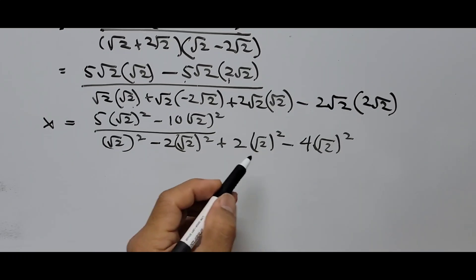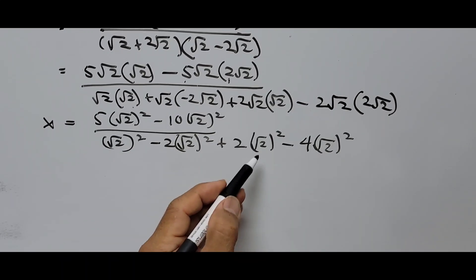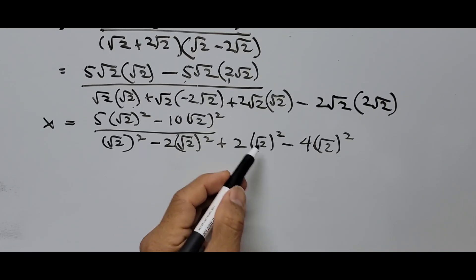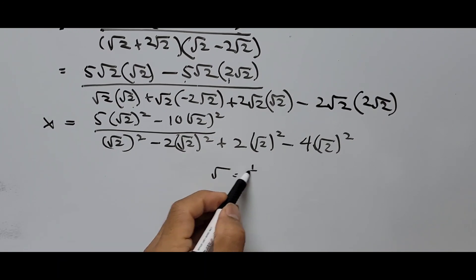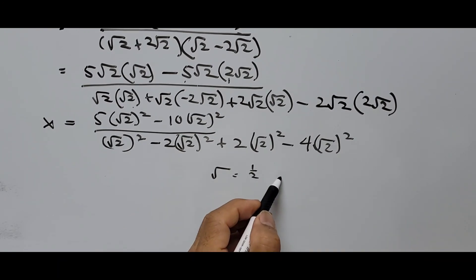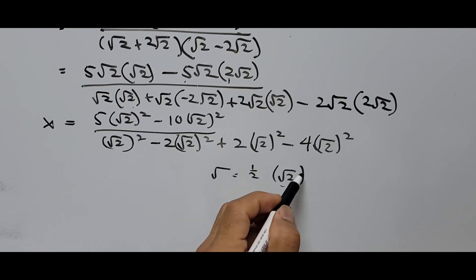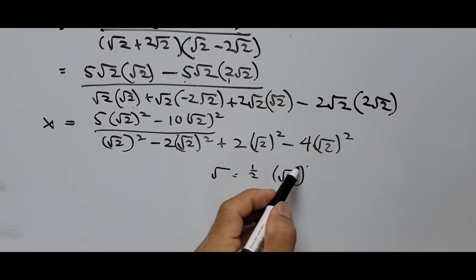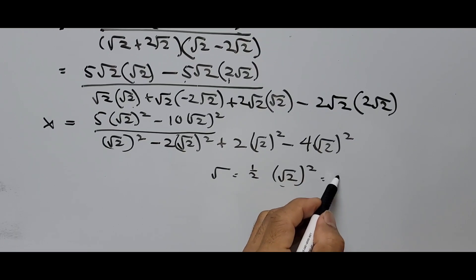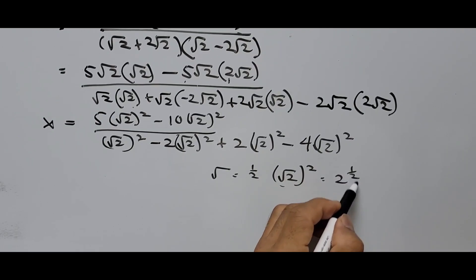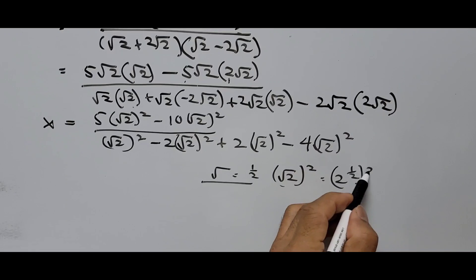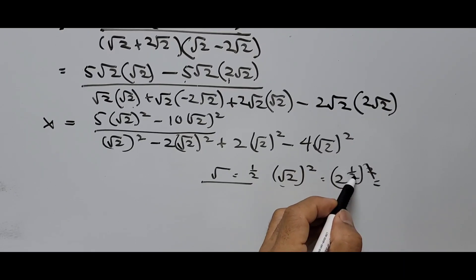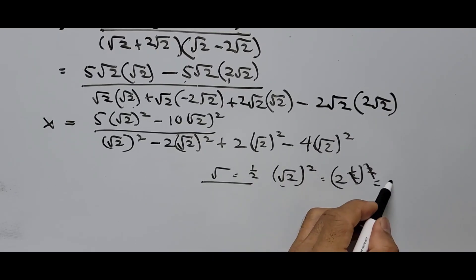Now, (square root of 2) squared simplifies because we can cancel the radical and the exponent. Since the radical stands for an exponent of one-half, the square root of 2 raised to the power of 2 is written as 2 to the power of (2 times one-half), which equals 2 to the power of 1. So that cancels: 2 divided by 2 is 1, and we end up with just 2.